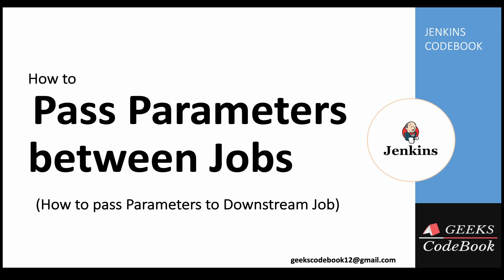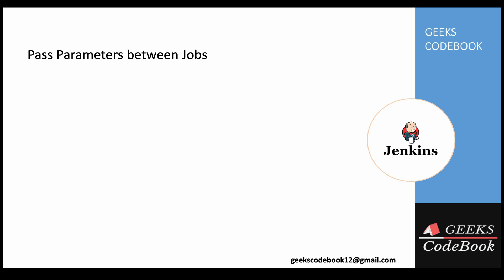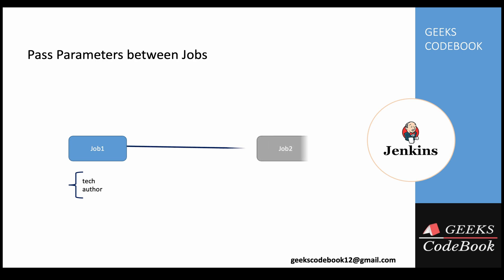In this tutorial I'll talk about how to pass information from one job to another job — how to pass build parameters from one job to another job. Let's say I have Job 1 which has two parameters: build parameter 'tech' and 'author', and I want to pass the same information to Job 2 once we trigger that second job from Job 1.